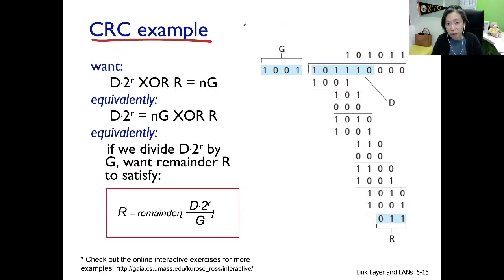Now, if you're wondering how the sender figure out the R sequence, here's how. Given the definition, concatenation of D and R should be exactly divisible by G. Now, let's apply XOR R on both ends that take us to this formula. Observe closer. This is like saying if we divide D by G, the remainder of that computation will be R.